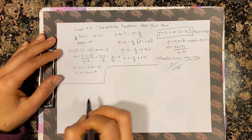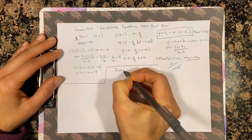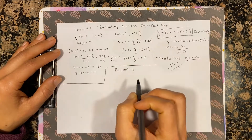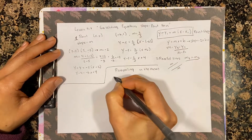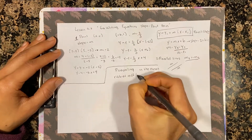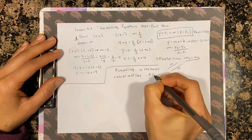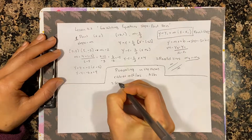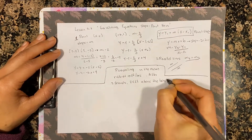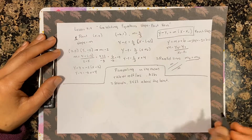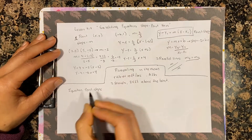Let's do a real-life application. You are parasailing and you stop, and now a rope from a boat is pulling you down at a rate of 10 feet per second. After two seconds, you are 25 feet above the boat. You are asked to write the equation in point-slope form.